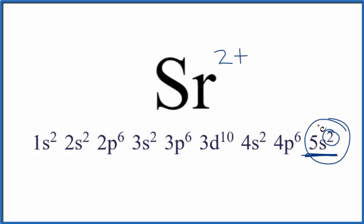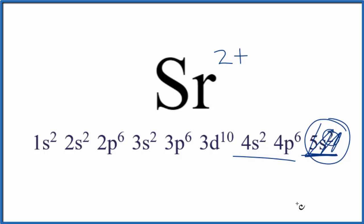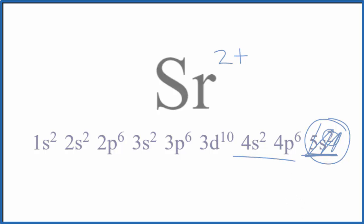Because we lost these two electrons, we now have an energy level underneath that's full. Since we have this full energy level, we have a stable configuration. By convention, we won't put dots around the positive ion — we just have Sr2+ for the Lewis structure for the strontium ion. This is Dr. B with the Lewis structure for strontium, Sr. Thanks for watching.